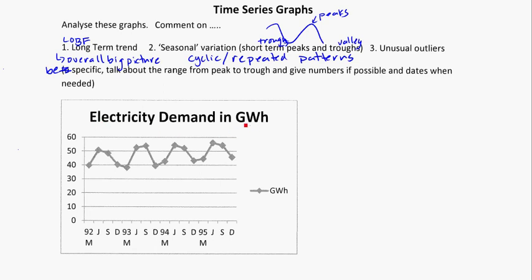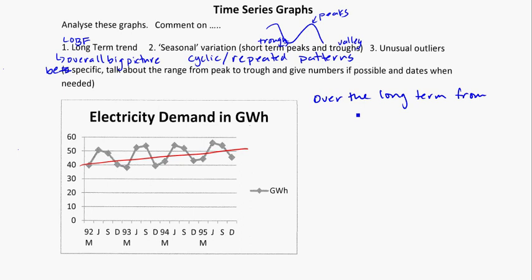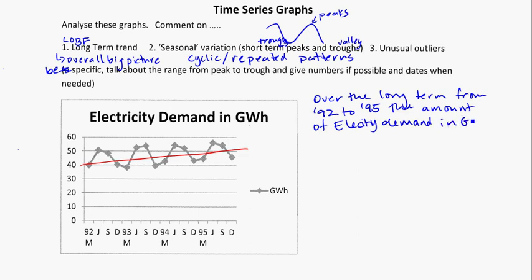Electricity demand in gigawatt hours. The first thing I might do is try to figure out what the long-term trend is. Scanning the graph, I notice it's not too steep, but there is a slight increase. Each of the peaks is a little bit higher than the peak before, and each of the troughs is slightly higher than before. I could put a long-term trend line on there showing a slight increase. So over the long-term, from 92 to 95, the amount of electricity demand in gigawatt hours increases slightly.